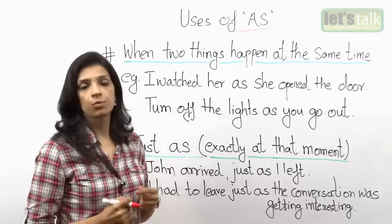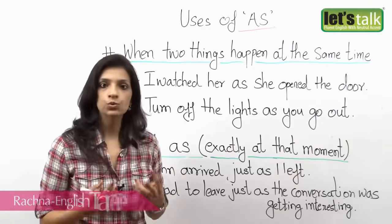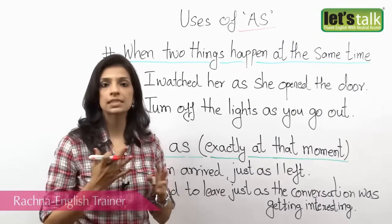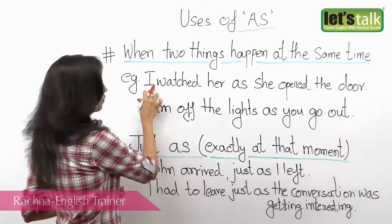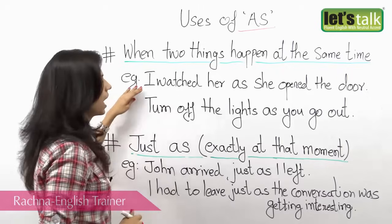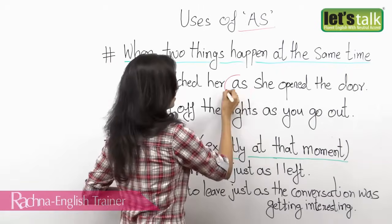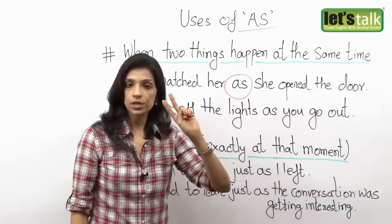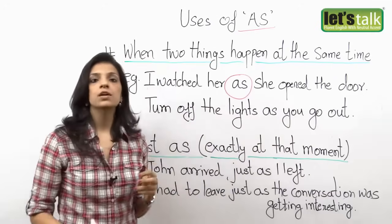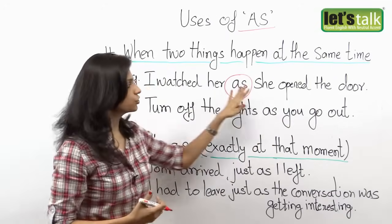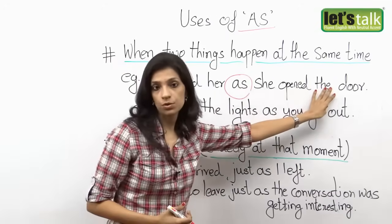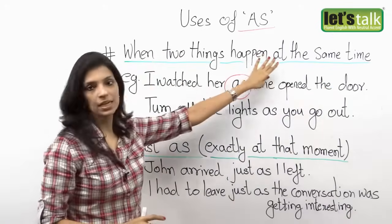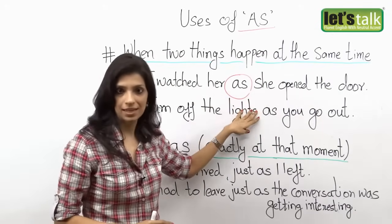We use 'as' when you want to say two things happened at the same time or over the same period of time. For example: 'I watched her as she opened the door.' So there were two things happening — you were watching her and she was opening the door. When you want to talk about two actions that happen at the same time, you use 'as'.